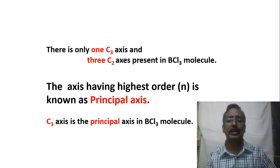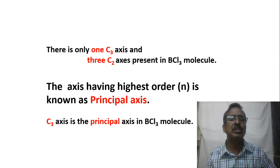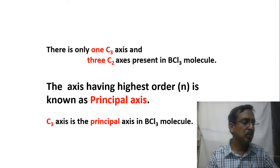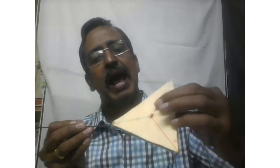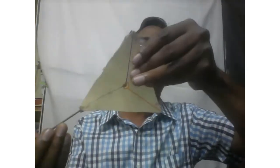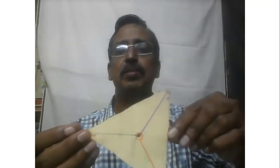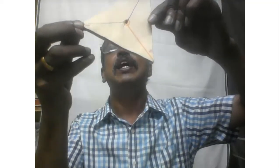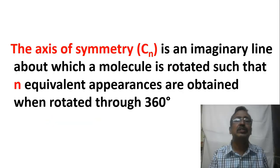The axis having the highest order n — that is the C3 axis — has a higher order than the C2 axis, and so the C3 axis is the principal axis in the BCl₃ molecule. This can be shown with a cardboard model: if I find an imaginary axis along a B-Cl bond and turn through 180 degrees I get the same appearance, and turning through another 180 degrees the same appearance is repeated again — confirming this is a C2 axis.